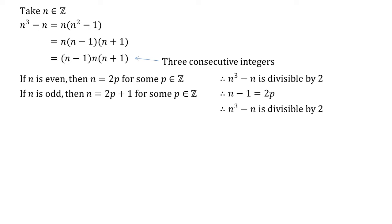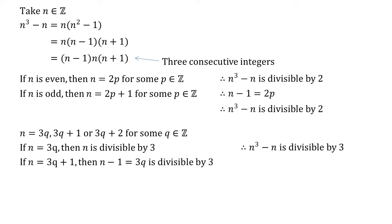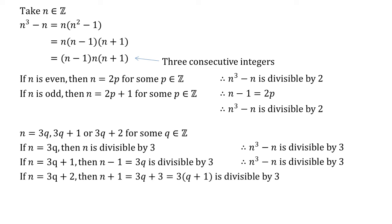Now we need to do the same thing for 3. If we take a whole number and divide it by 3, it either divides perfectly with no remainder, there's a remainder of 1, or there's a remainder of 2. So we can write n as 3q, 3q plus 1, or 3q plus 2 for some integer q. If n equals 3q then n is divisible by 3, and as n is a factor of n cubed minus n, our expression is divisible by 3. If n equals 3q plus 1, then n minus 1 equals 3q, which is divisible by 3, and again that's one of our factors so our expression is divisible by 3. Finally, if n equals 3q plus 2, then n plus 1 equals 3q plus 3, which factorises as 3 lots of q plus 1 — hence that is also divisible by 3, and our expression must be divisible by 3.